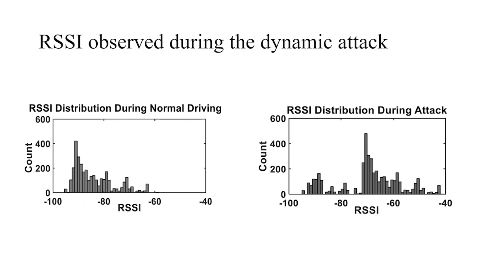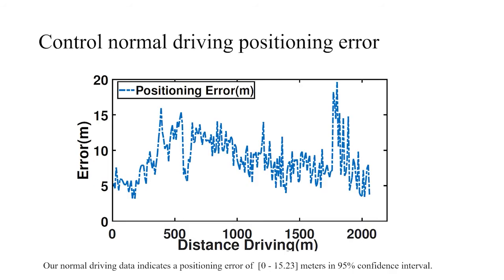During the attack, we can observe an increased RSSI as the right figure shows, compared to the left figure which is the normal driving. We first check the control normal driving positioning error. It shows a positioning error of 0 to 15.23 meters in 95% confidence interval.